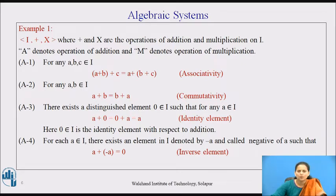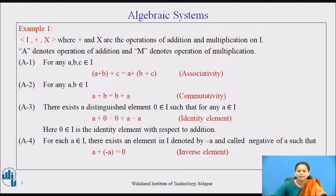Let us define certain properties that this algebraic system is going to have. These are numbered A1, A2, etc., where A stands for addition. A1 states: for any a, b, c which belongs to I, we get (a + b) + c = a + (b + c), and we all know that this is the property known as associativity.